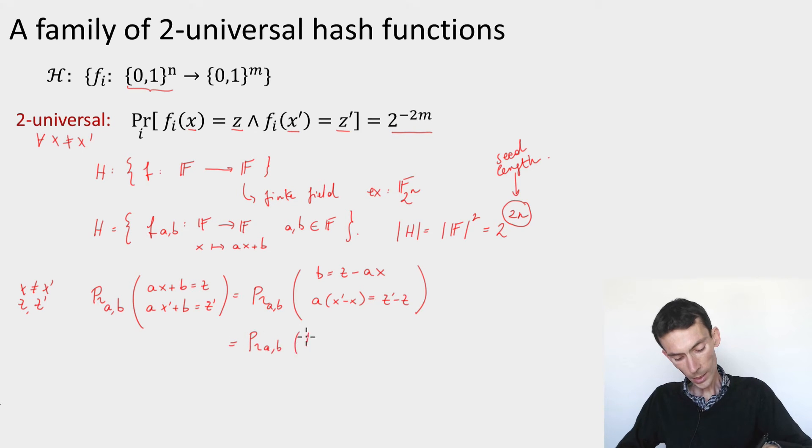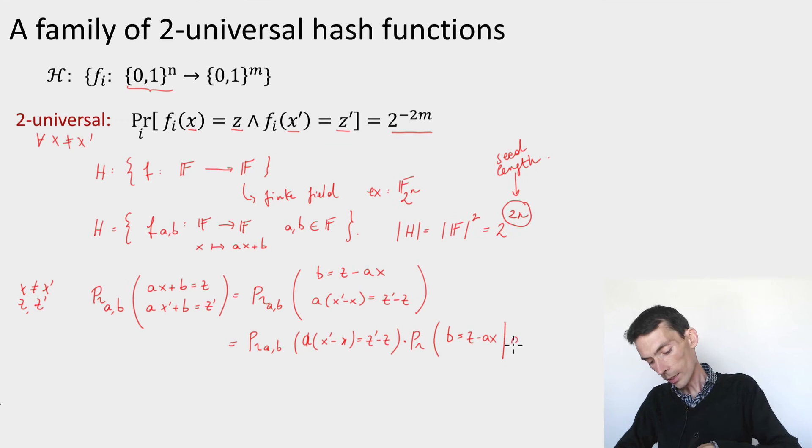So this is the probability over a and b that a(x prime minus x) equals z prime minus z, times the probability that b equals z minus ax, conditioned on a(x prime minus x) equals z prime minus z.